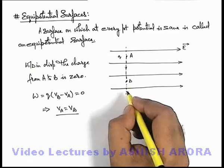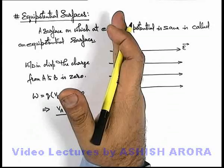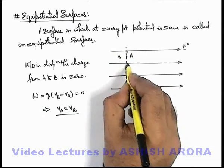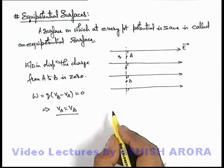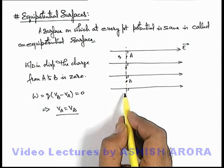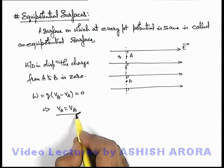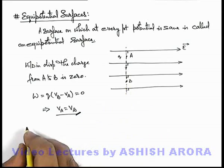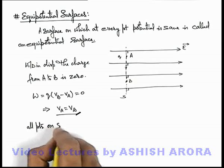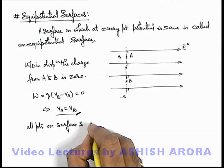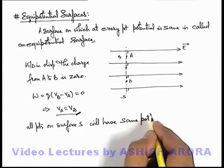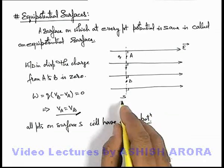Or we can say we consider an imaginary surface oriented such that at every point it is perpendicular to the electric field. At every point of the surface the electric field is normal to it. In this situation we can say all the points of this surface will be at the same potential — and hence this surface we can call an equipotential surface.